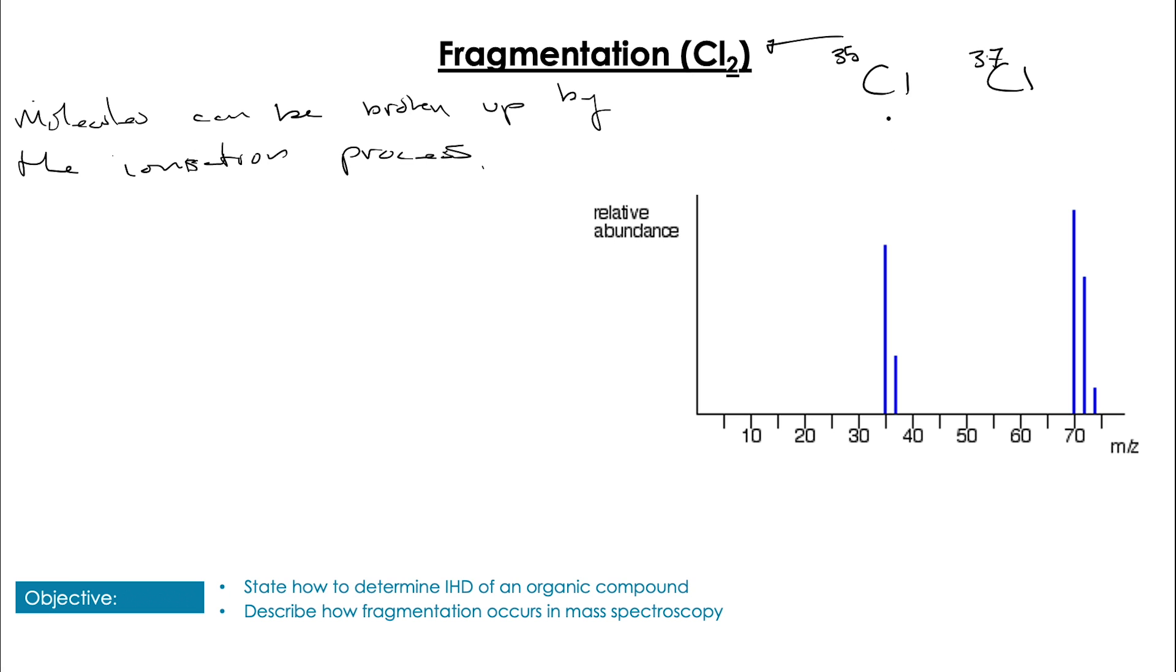What this means is the end spectra that we end up with has signals at many different m/z values. Take this mass spectra for Cl₂ for example. We know Cl has two isotopes, so we would expect three lines for the different combinations of those two isotopes, and we do see those at the molecular ion peak. However, we also see these other lines.